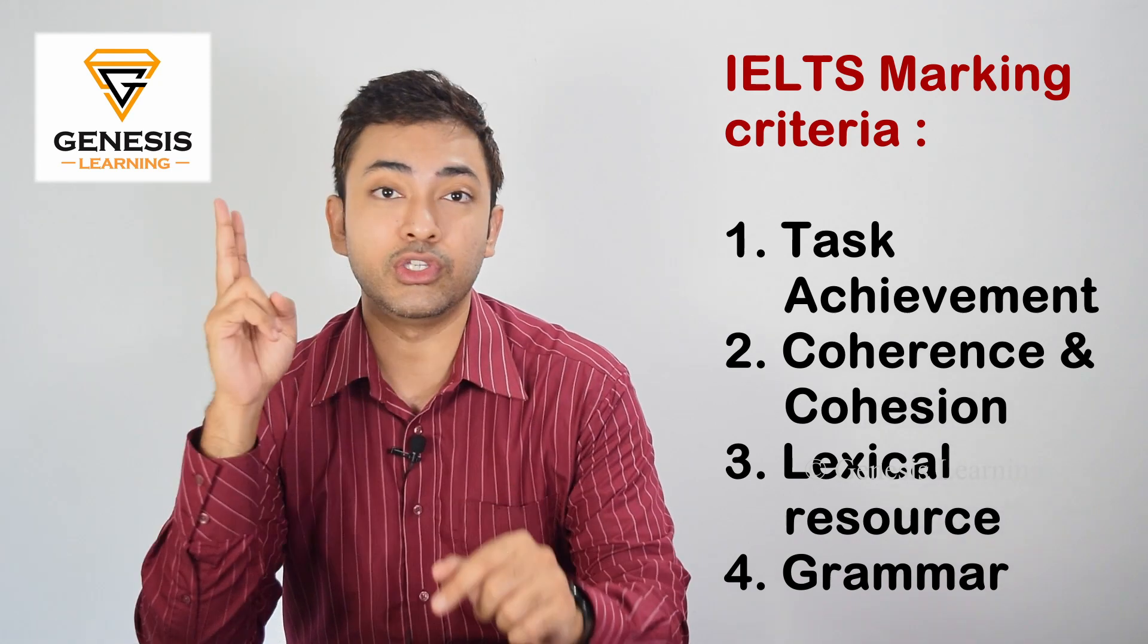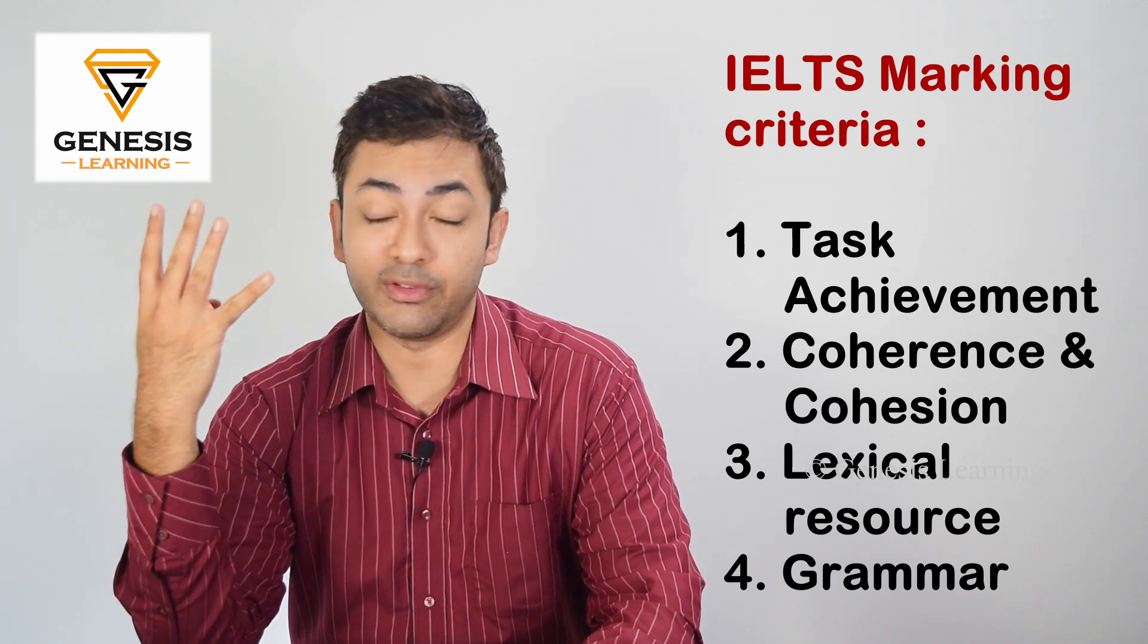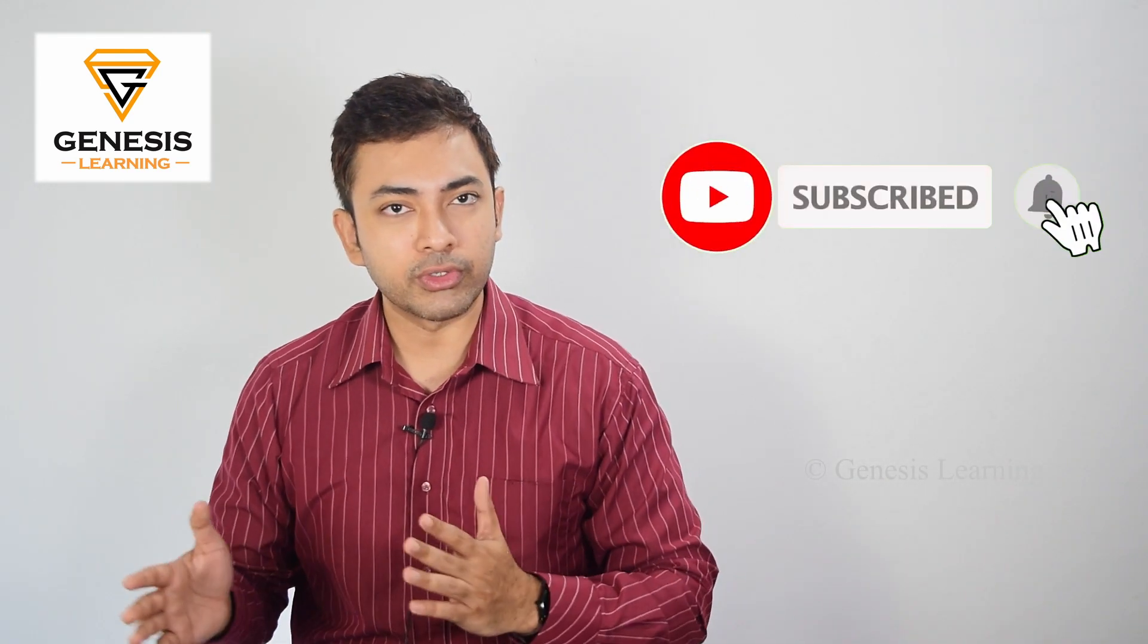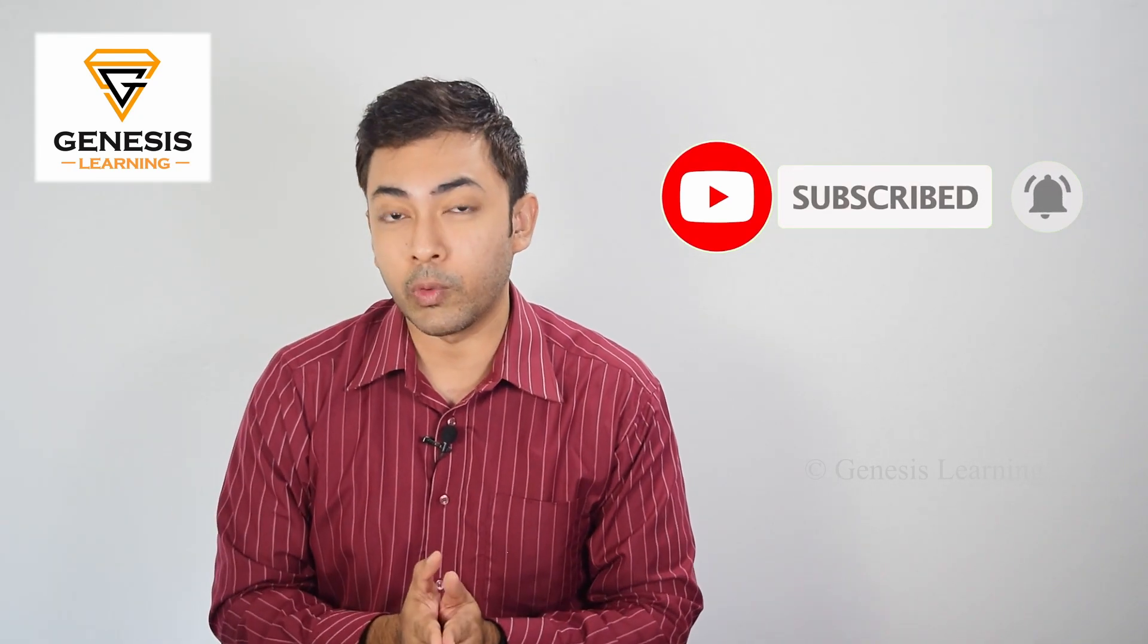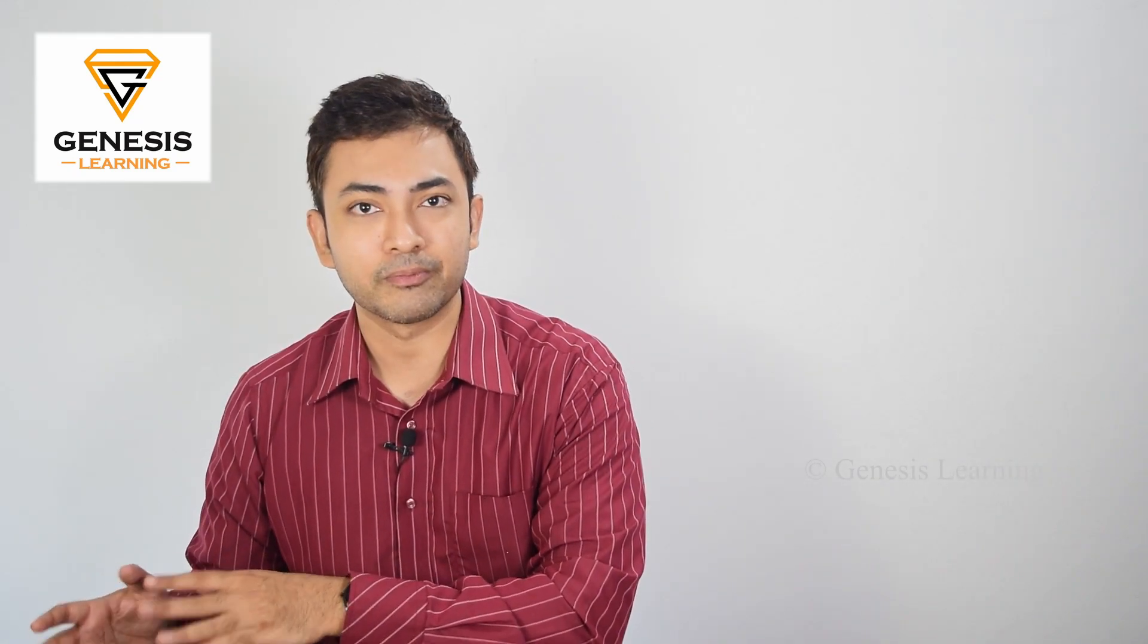The IELTS writing exam, as you know, is marked on four different criteria. The first one is your task achievement, the second one is your coherence and cohesion, the third is lexical resource, and the fourth is grammar. Each of them contributes 25% to the overall score. I'm going to talk specifically about coherence and cohesion. How you can achieve it? You just need to use a variety of different phrases to link one idea to the next one, so that the reader can follow what you are thinking.